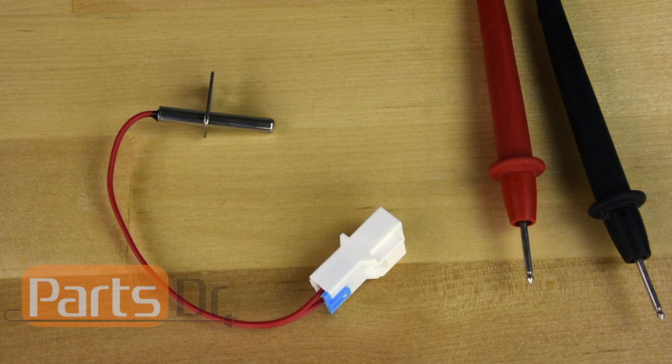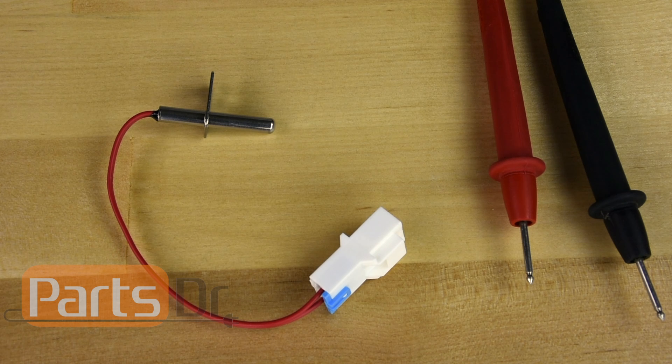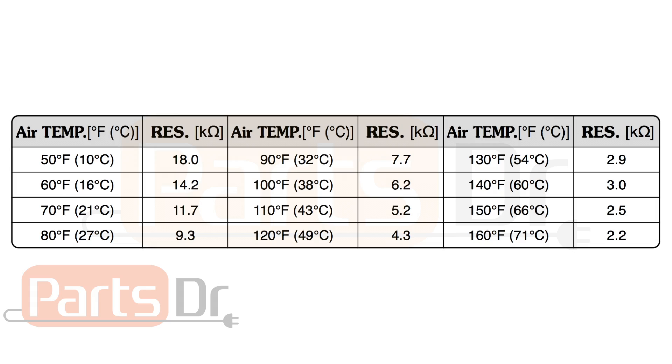The resistance value of the thermistor varies depending on the temperature of the dryer. Here's a chart that shows the different resistance values at different temperatures.